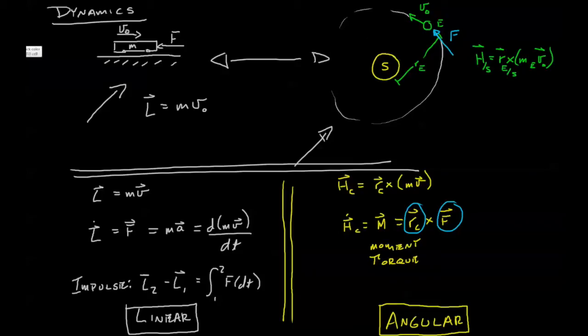Finally, we have the idea of linear impulse and angular impulse. Angular impulse we take h2 minus h1 and we integrate with respect to time of rc cross f. So the radius respect to c cross f dt.